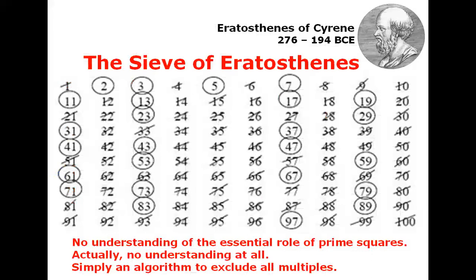Some don't like this rhythm too much. They say this is simply the Sieve of Eratosthenes. No, that's not true. The Sieve is a very simple, very basic algorithm that excludes all multiples, but it doesn't tell us anything about the prime squares and all the other beautiful things we can find in this rhythm. If you only look with the left hemisphere, you don't see any difference between this sieve and what I just showed you. But if you have your right hemisphere active as well, then you see there are many, many differences. The prime rhythm is a very beautiful, very intelligent rhythm.